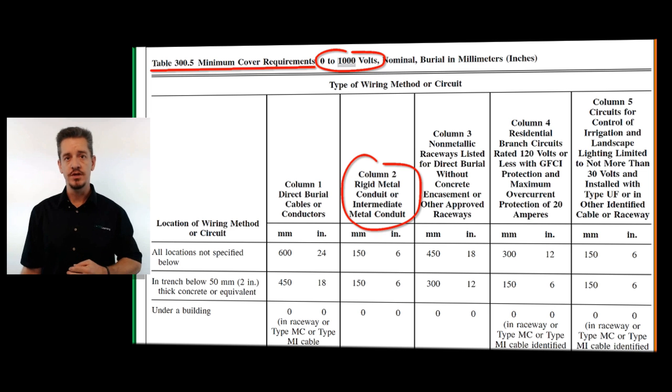That's whenever you're outside underneath of four inches of concrete and your concrete extends at least six inches on each side of your metal raceway. But in most circumstances, it's going to be six inches.